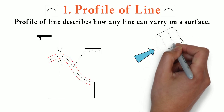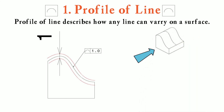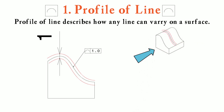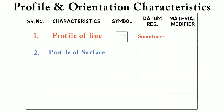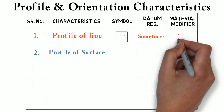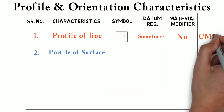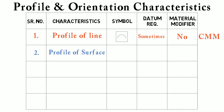In 3D, this is the profile which needs to be controlled and should lie in between these two red lines. This tolerance is not dependent on any datums, but sometimes we use datums. Also, we don't use material modifiers here. We check this tolerance with the help of a CMM machine.